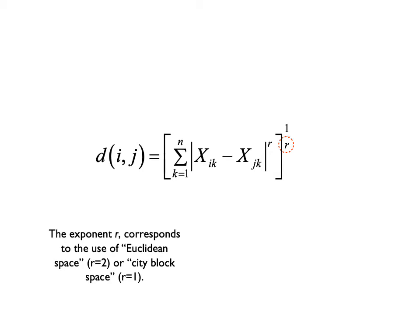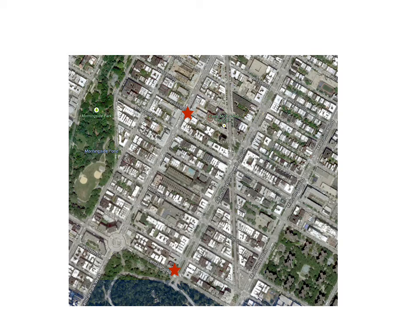What's the difference between Euclidean and city block space? Consider a map of city blocks in Manhattan — two locations marked with stars. There are two ways to calculate how far those two points are from each other. One is Euclidean: you fly straight across, the shortest distance between two points being a straight line — the hypotenuse of a right triangle.